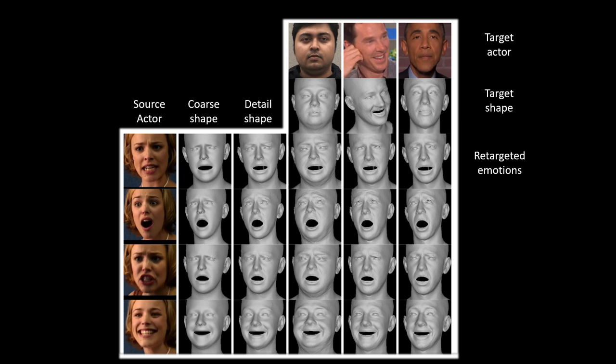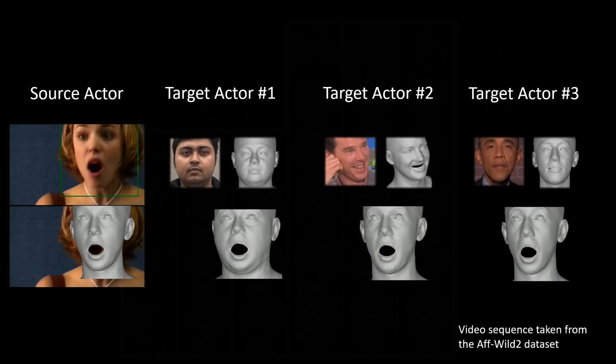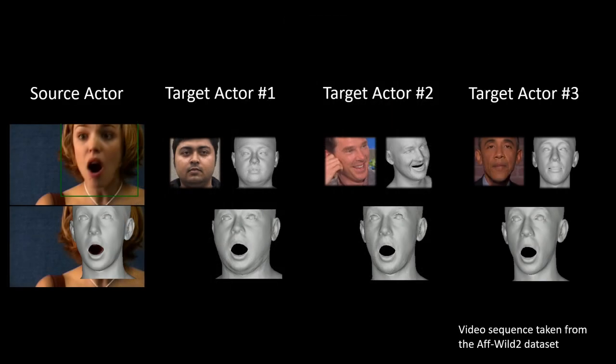Given another image of a target person, we reconstruct their 3D face with EMOKA and transfer the expression and head pose of a source subject to the target subject while retaining the source identity. Here we see the reconstructed detail shapes of three different people, animated with the pose and expression from the source expression sequence.